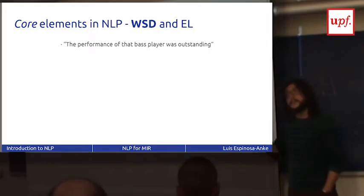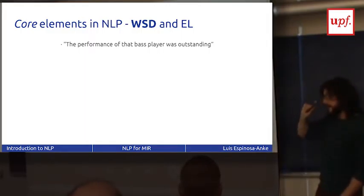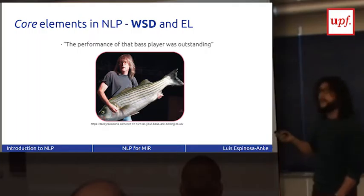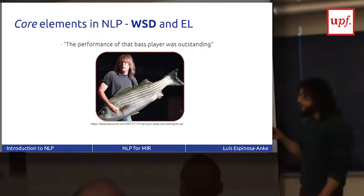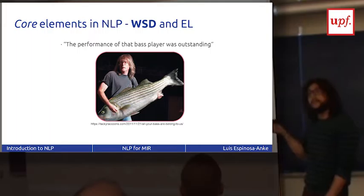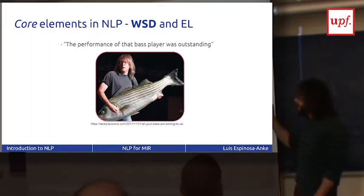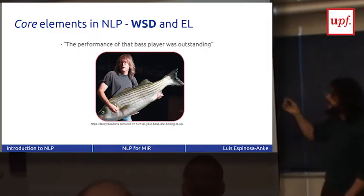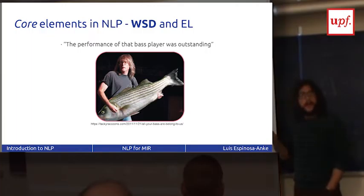Then there's word sense disambiguation — the same idea as the music/metal fan example. In 'The performance of that bass player was outstanding,' you have 'bass' with a musical sense and 'bass' with a fish sense. Your word sense disambiguation system should look at the ambiguous word and leverage contextual information to decide on the correct sense. Simply looking at the sentence, words like 'performance' and 'player' suggest this is the music sense and not a fish.